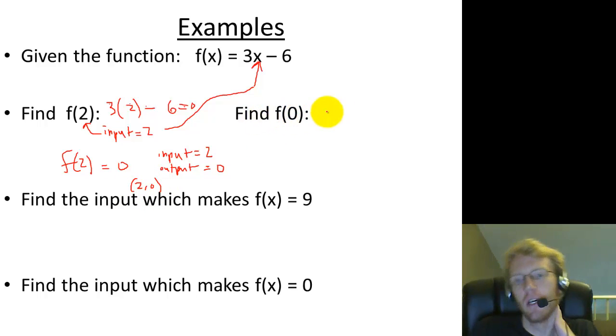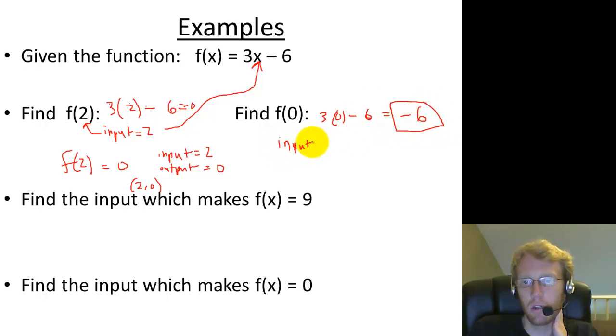Okay, let's find f of 0. f of 0 means the input is 0. So we look at this equation, and we say, I'm going to input 0 here, so I'm going to put 3 times 0 minus 6. Well, 3 times 0 is just 0 minus 6 is minus 6. So when my input is 0, then my output is negative 6, and that would correspond to the point on the graph 0 comma negative 6.